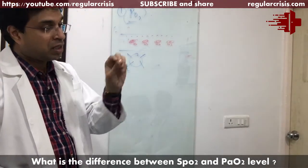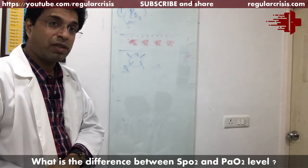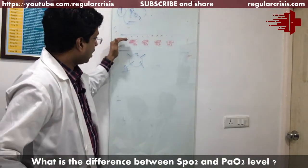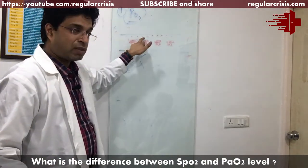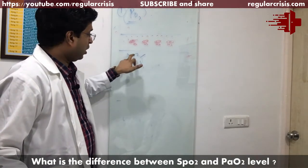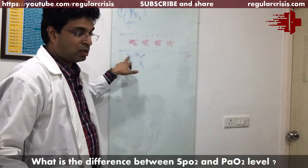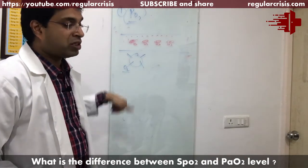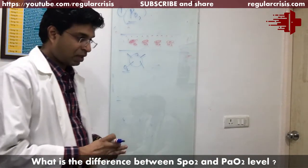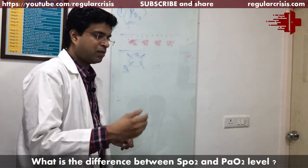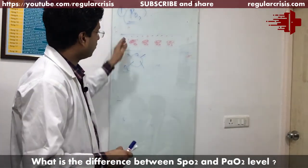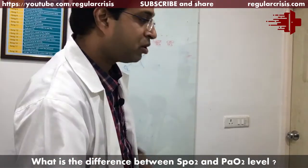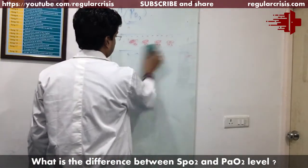In ABG we are seeing the dissolved plasma PO2, and in the pulse oximeter we are seeing the oxygen that has saturated hemoglobin. So why do we need to measure two — can we not work with just one? The relationship between the two is explained by the sigmoid curve, the oxygen dissociation curve.